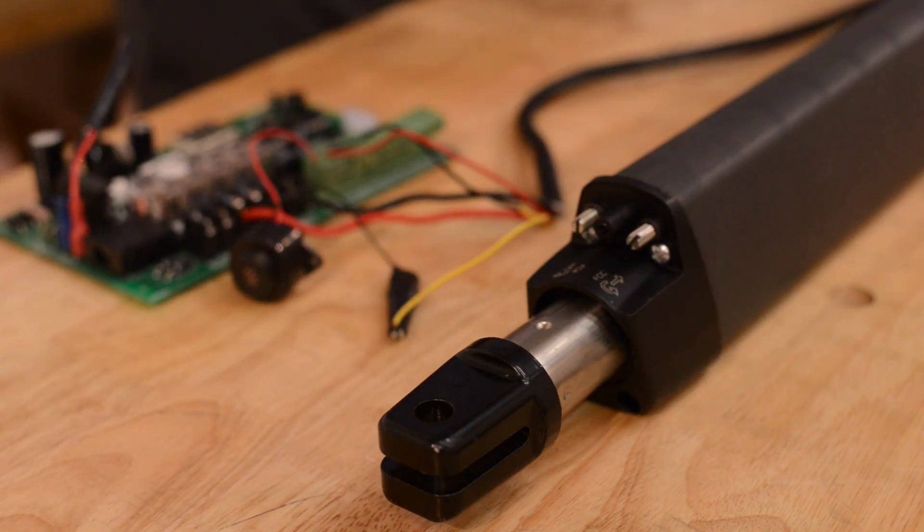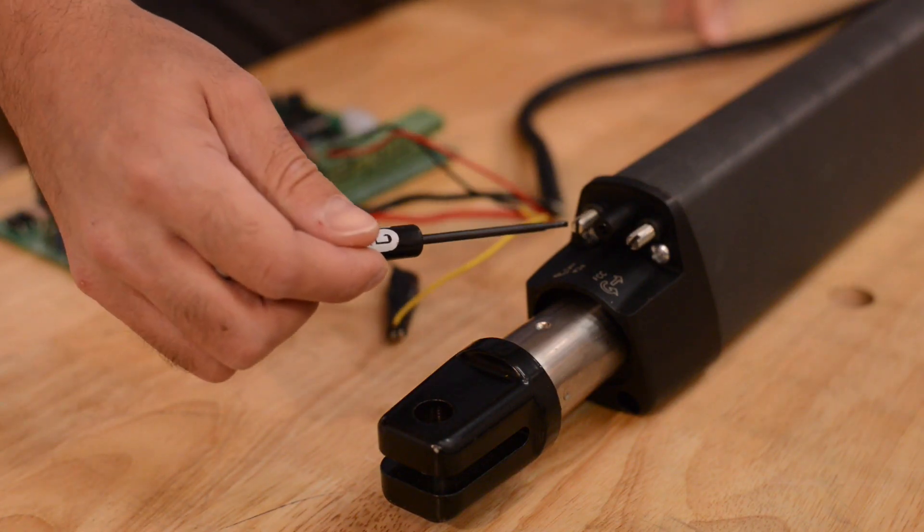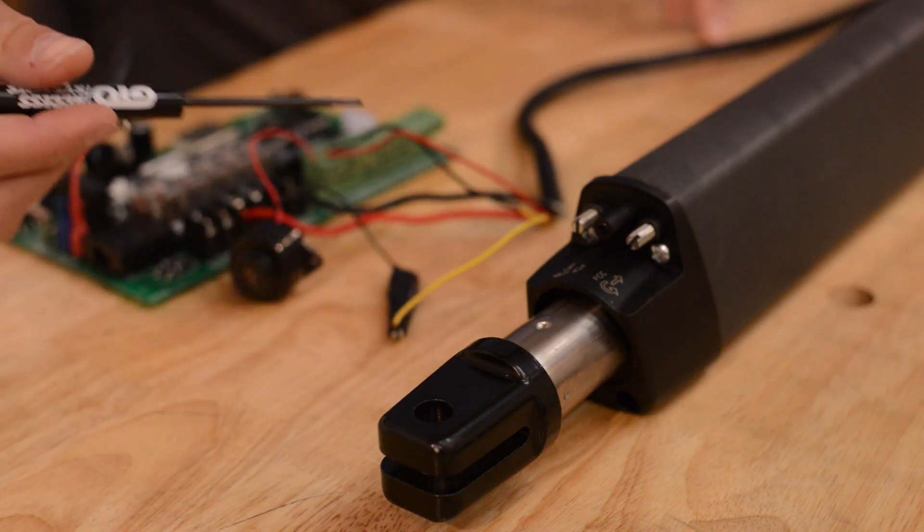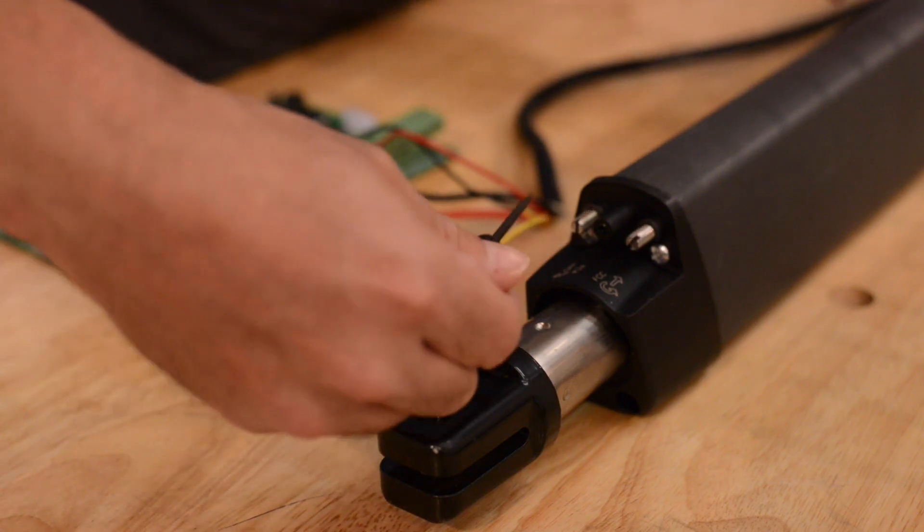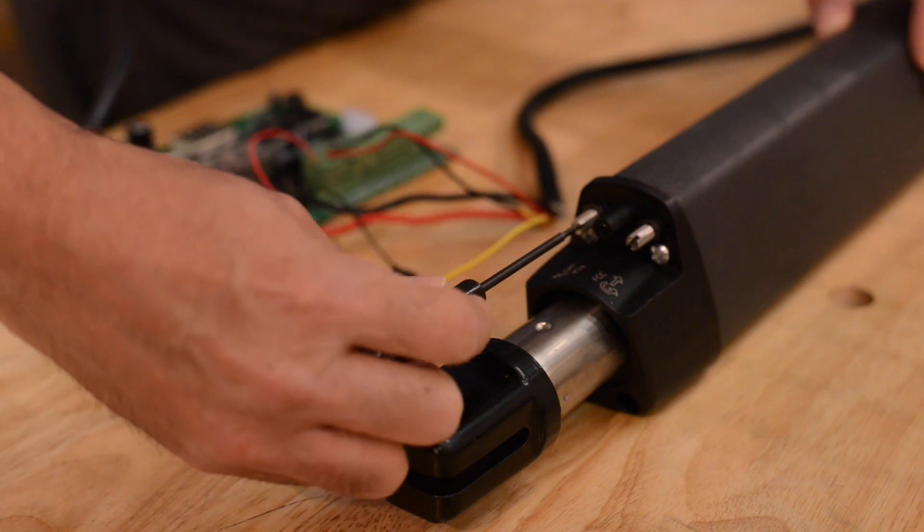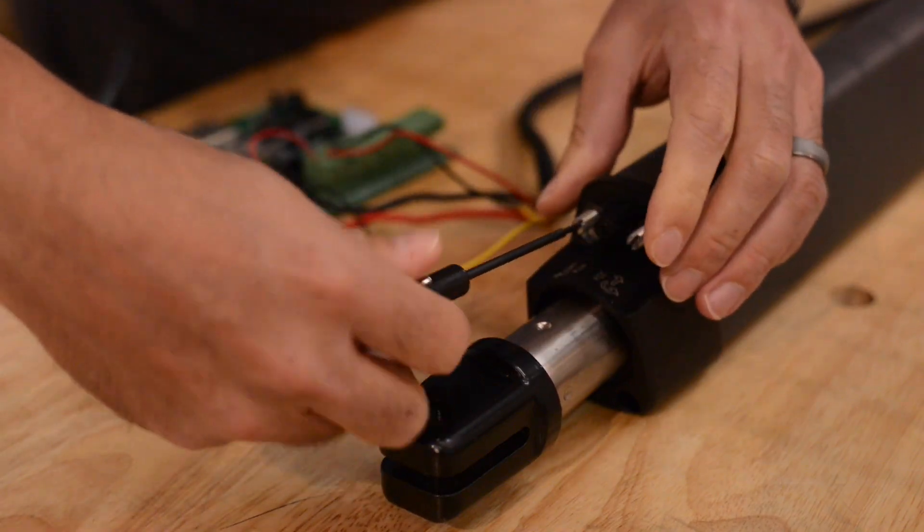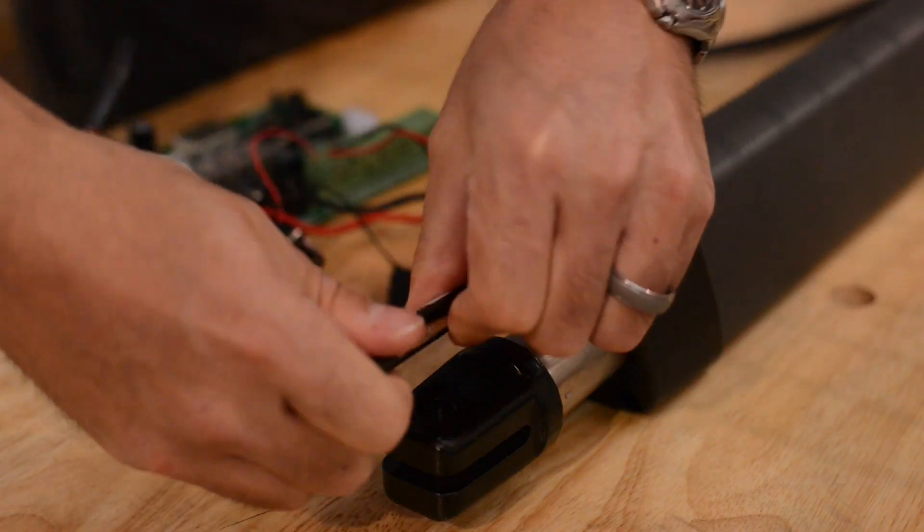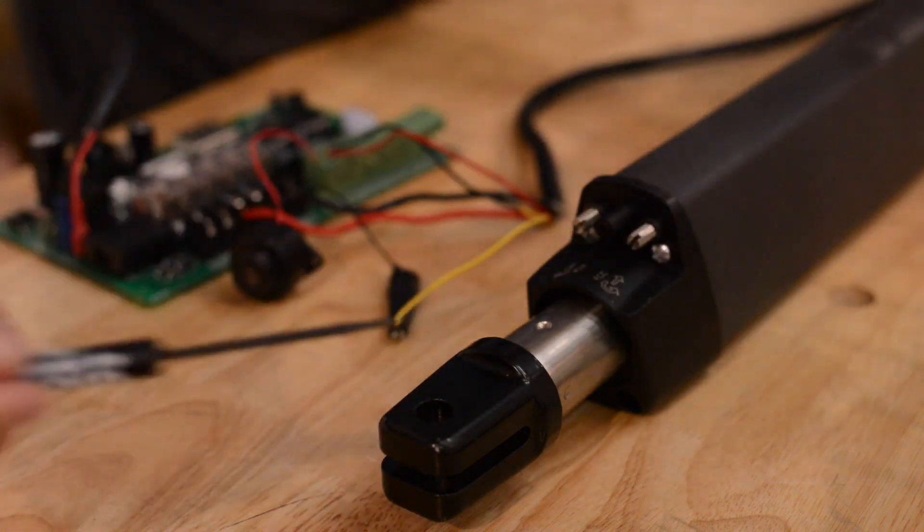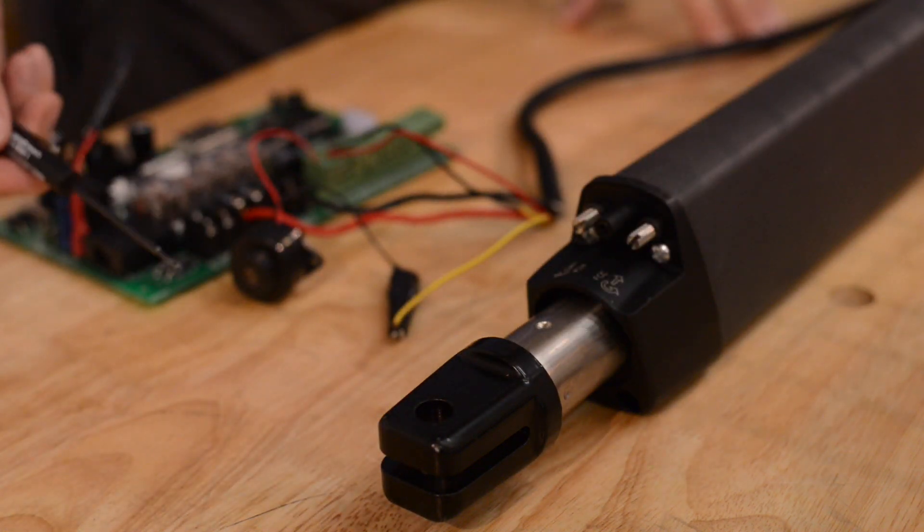We are going to turn the FCA screw counterclockwise so that the gate can open more. We're going to turn this screw until we no longer hear this buzzing. If you feel resistance, you want to stop turning. The buzzer is now stopped.